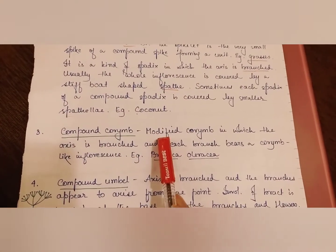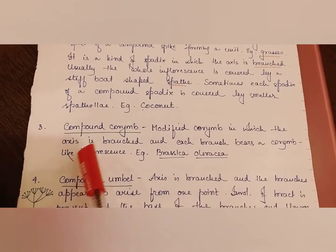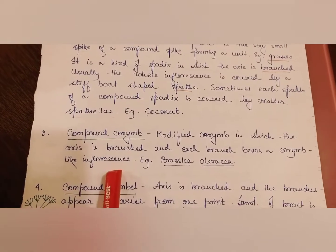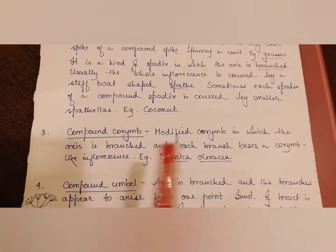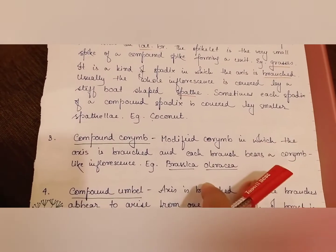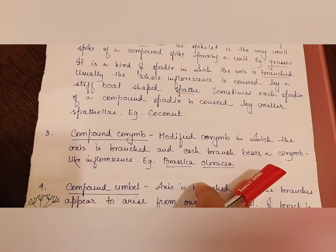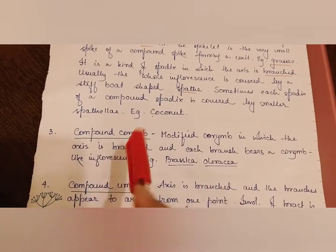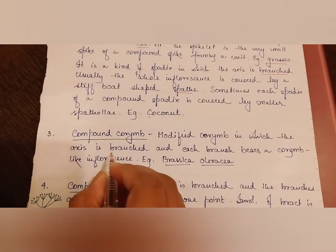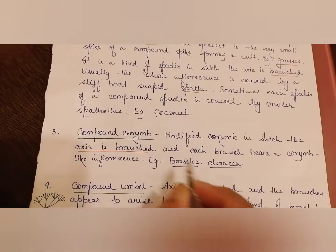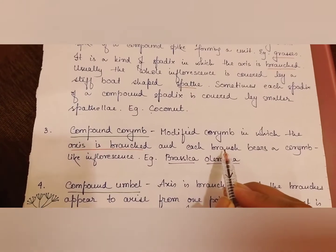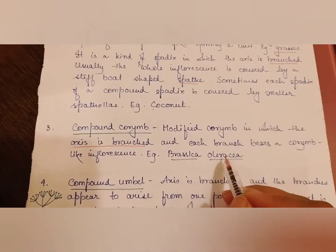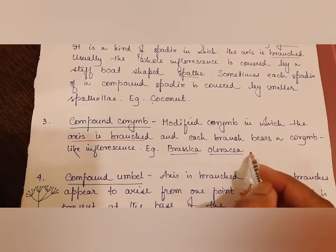Next is compound corymb: it is a modified corymb in which the axis is branched, and each branch bears a corymb-like inflorescence. The axis is branched and the branches each bear a corymb-like arrangement. It is found in Brassica oleracea.